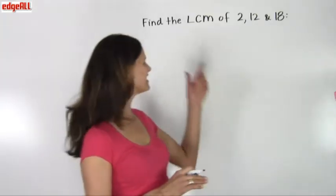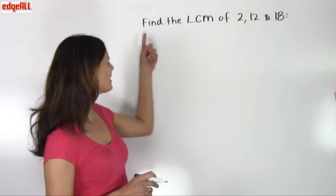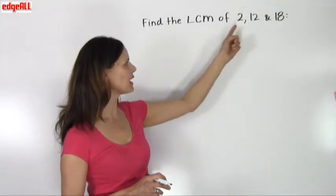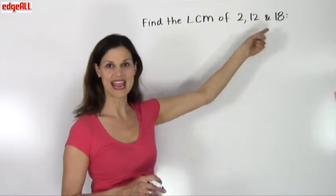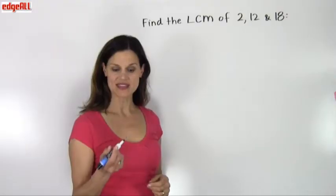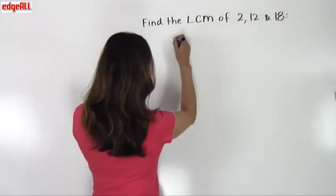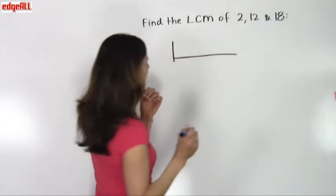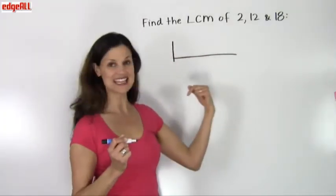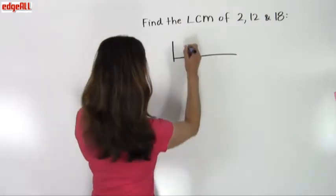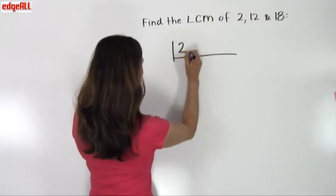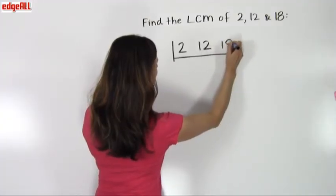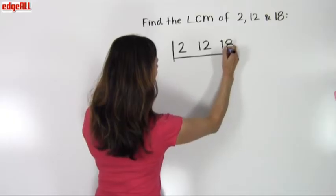Let's take a look at this example. We are asked here to find the least common multiple of 2, 12, and 18. In the ladder method, we start with an L shape and we place our three numbers inside of that L shape. So I am going to put the 2, the 12, and the 18 inside the L shape.